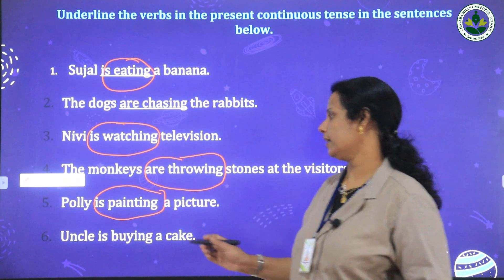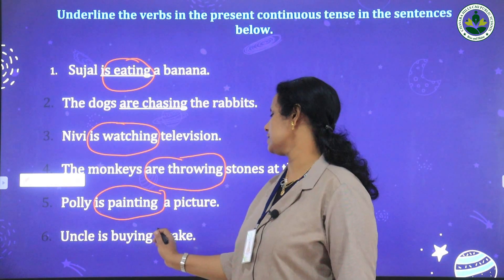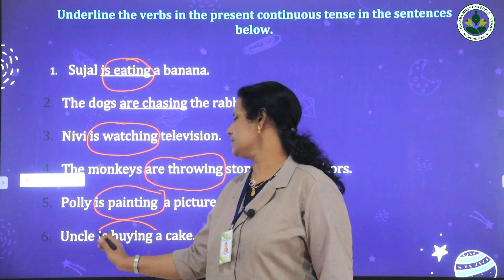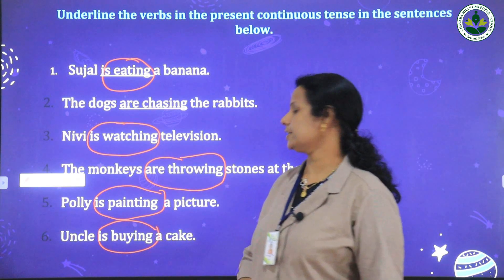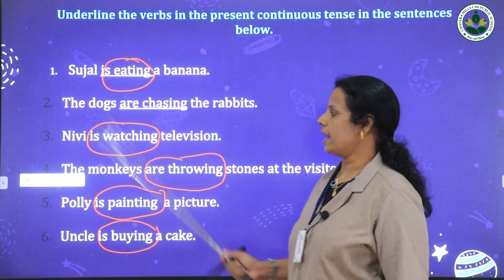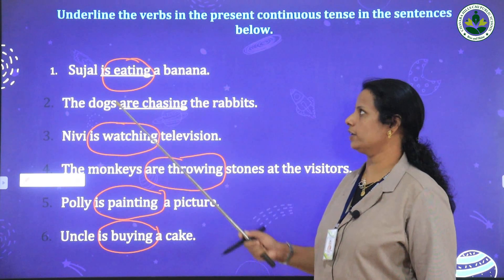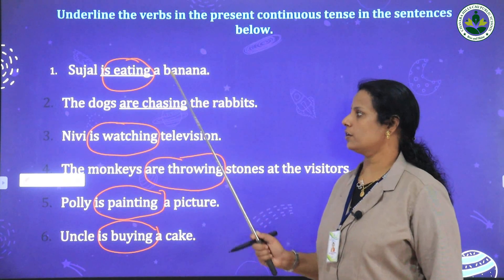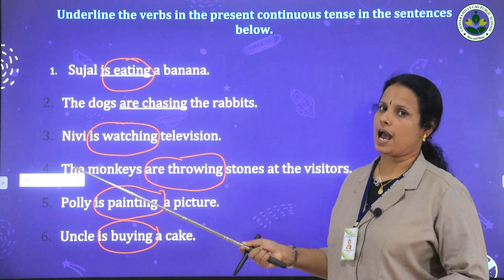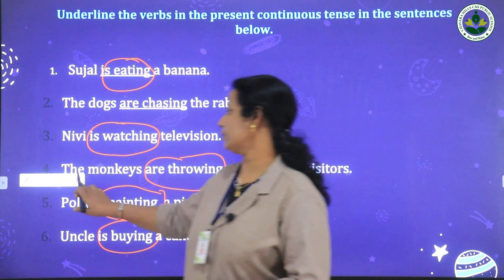More verb examples with 'ing': dance–dancing, sing–singing, play–playing, jump–jumping, read–reading, run–running, eat–eating, cry–crying, beat–beating. Last sentence: 'Uncle is buying a cake' — the verb is 'is buying.' Underline these verbs in your textbook.